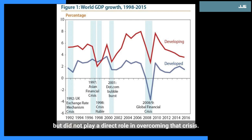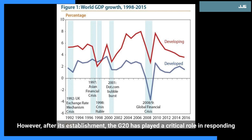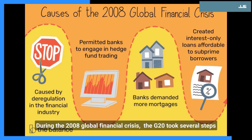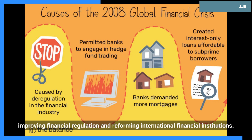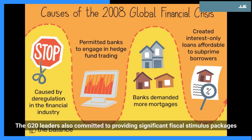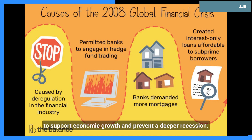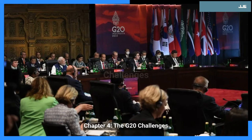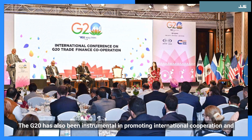Chapter 3: The G20's Contribution to the World. The G20 was established in 1999 as a response to the 1997 Asian financial crisis, but did not play a direct role in overcoming that crisis. However, after its establishment, the G20 played a critical role in responding to other global crises — for example, the 2008 global financial crisis. During that crisis, the G20 coordinated macroeconomic policies, improved financial regulation, reformed international financial institutions, and committed to providing significant fiscal stimulus packages to support economic growth and prevent a deeper recession. Through these efforts, the G20 helped stabilize the global economy and prevent a repeat of the Great Depression.